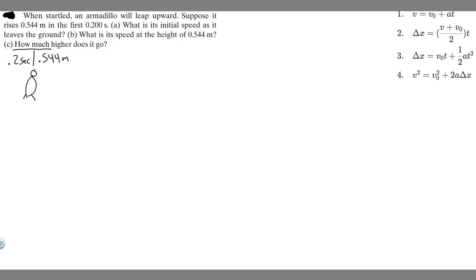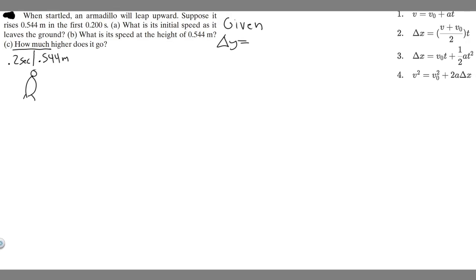Let's write down what we're given. Whenever I solve these freefall problems, you always want to write down all your variables for the kinematic equations and then decide whether or not you have them. The kinematic equations use delta x — just keep in mind it's delta y here because we're in the y-direction. So our variables are: delta y, v, v sub 0, a, and t.